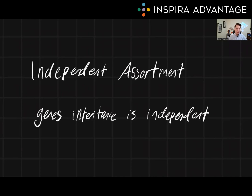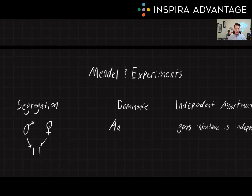Finally, we have the third law, the Law of Independent Assortment. This law states that the inheritance of one gene is not affected by the inheritance of another gene — each gene is passed on to the offspring independently of other genes. Mendel's three laws help us understand the inheritance of traits and provide a basis for predicting the likelihood of certain traits being expressed in offspring based on the traits of the parents.